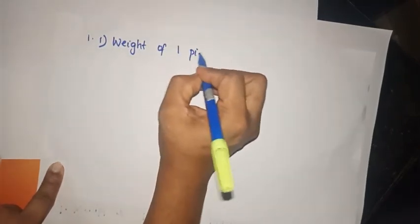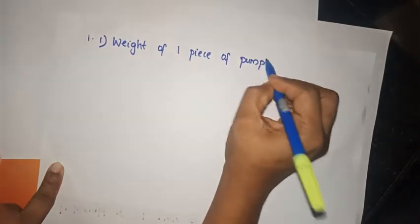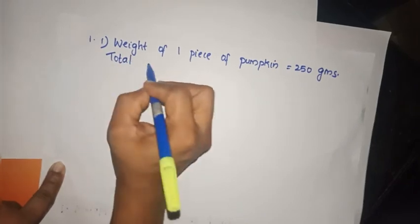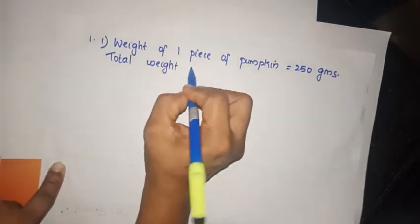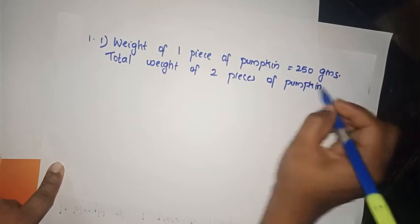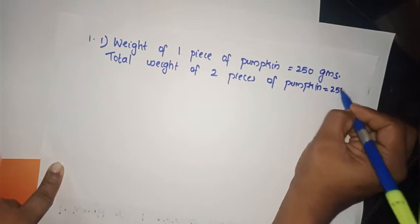Let's begin now. The first question: what is the total weight of two pieces of pumpkin, each weighing 250 grams? One piece of pumpkin weighs 250 grams, so we have to add them. The total weight of two pieces of pumpkin is equal to 250 times 2.